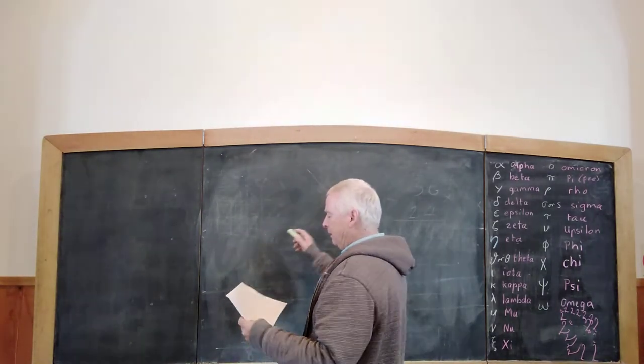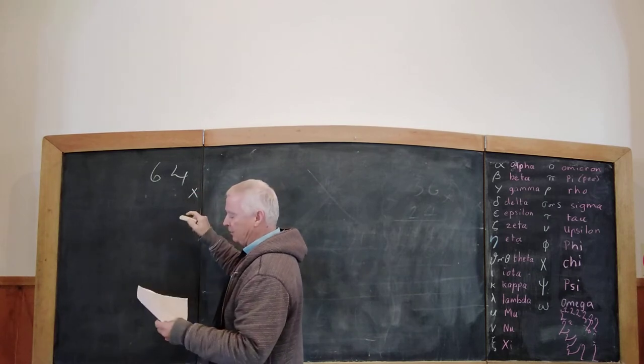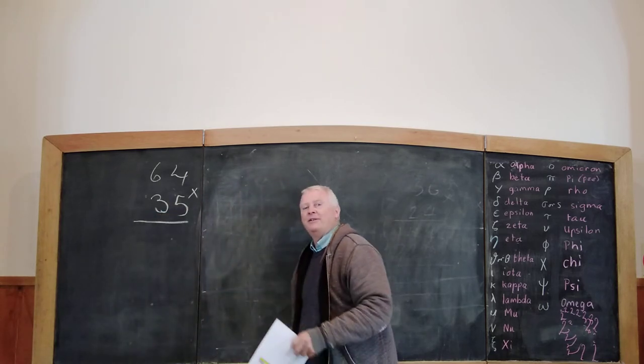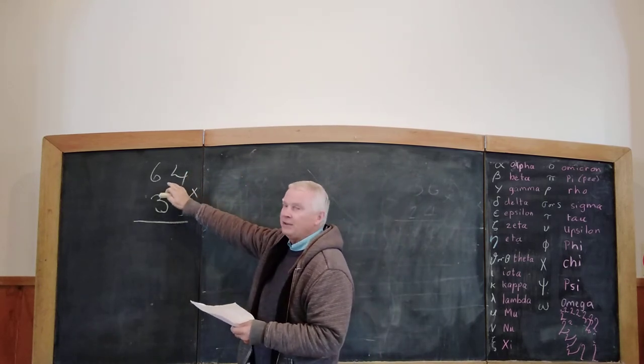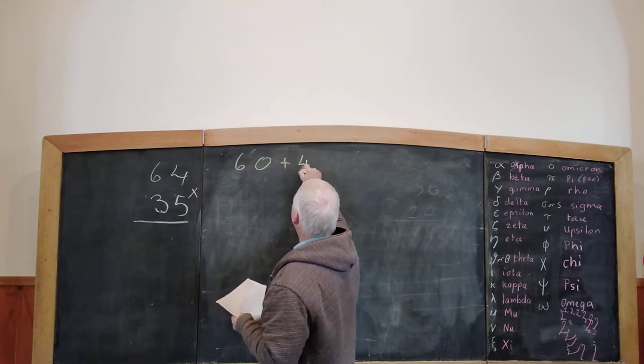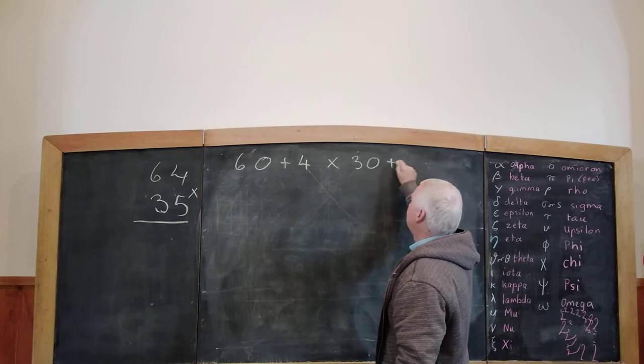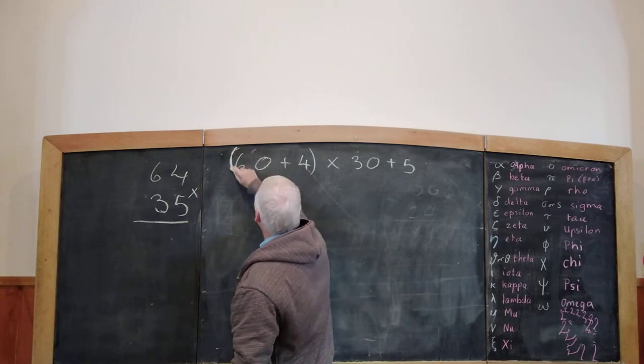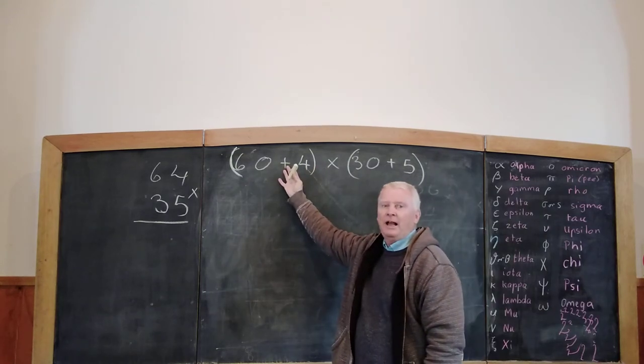So, we take two numbers: 64, I'll put it over here, 64 times 35. I hope you can see that. In this method I would take 64 and I would expand 64. So, 60 plus 4, times 30 plus 5. We're going to put brackets. You can see this has to apply against this.